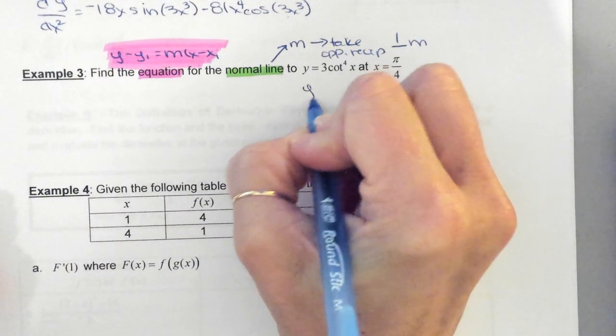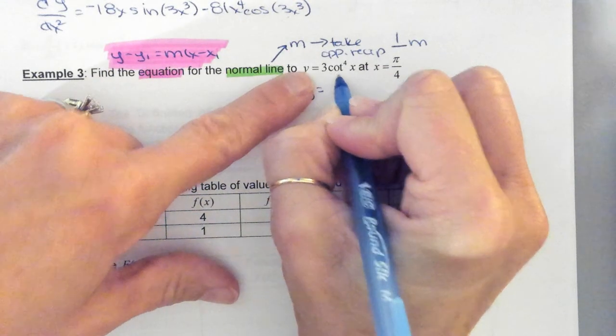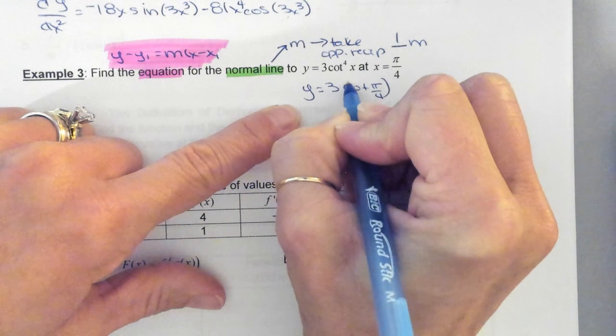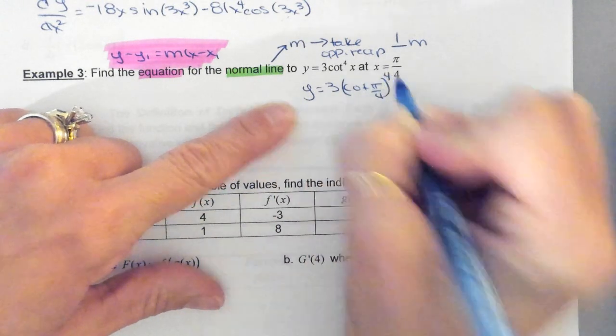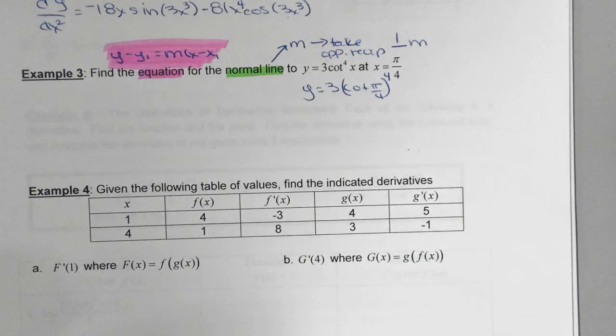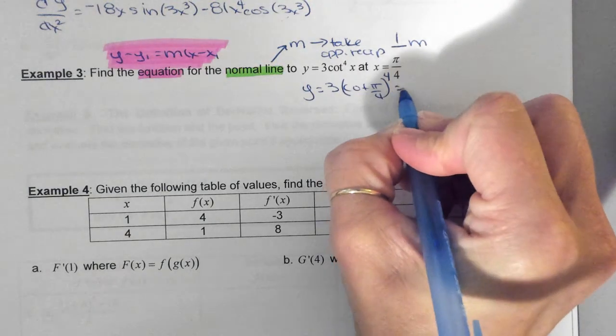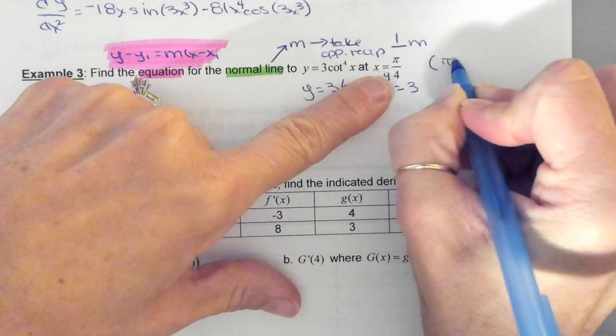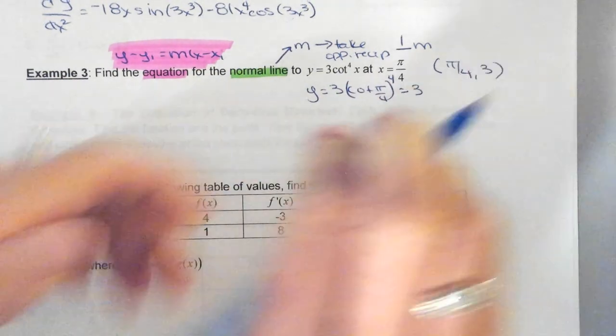So, what we have here is y is equal to - and I'm going to rewrite this just a little bit - 3 cotangent of pi over 4, and this is going to be to the fourth power. I love pi over 4, and this is why. What's the tangent of pi over 4? So, what's the cotangent of pi over 4? So, what's 1 to the fourth power? What's 1 times 3? Yeah, it's 3. Everybody usually says 1. So, that means y is equal to 3. So, we have the point pi over 4, 3. This is important.